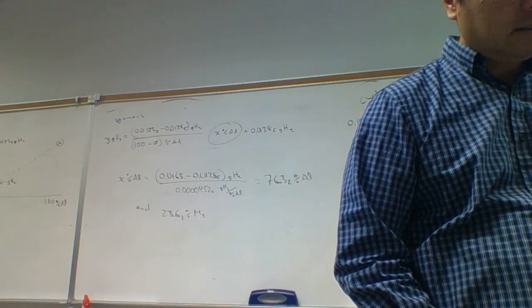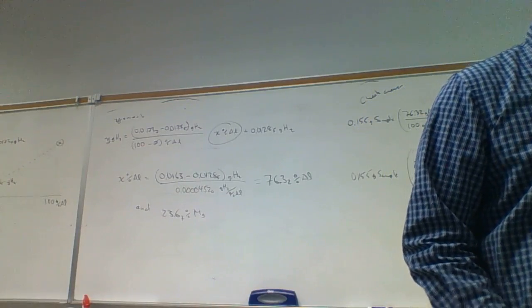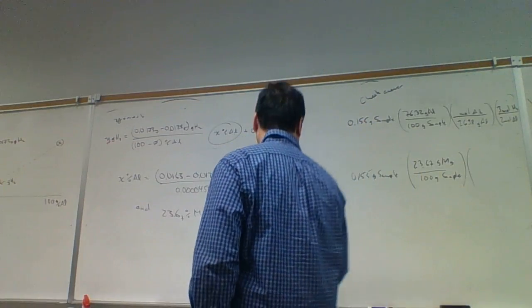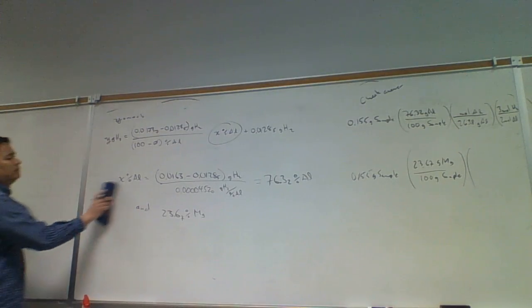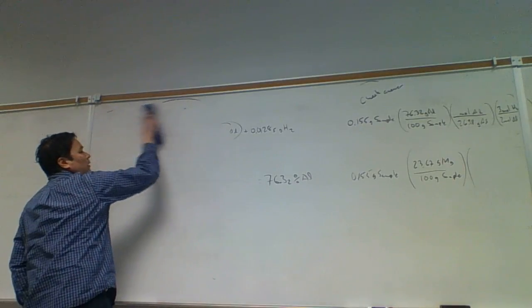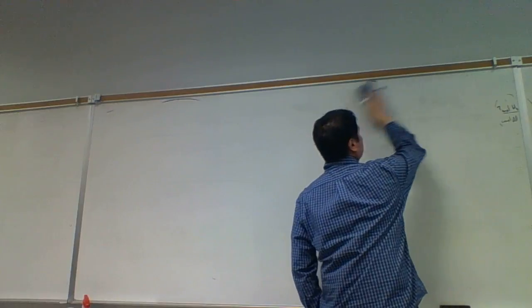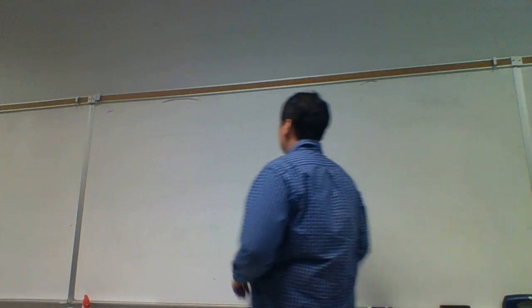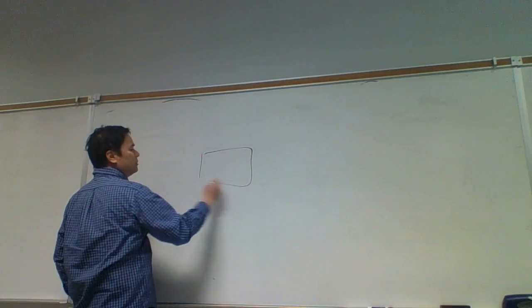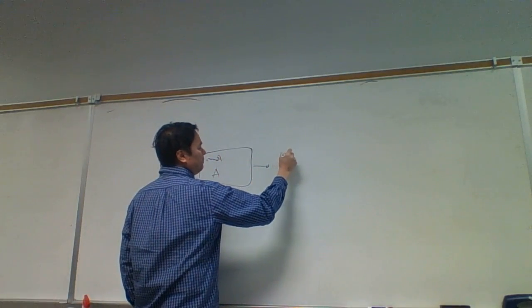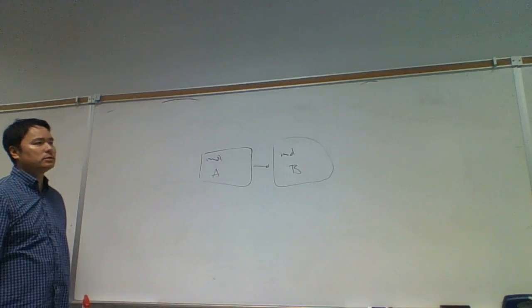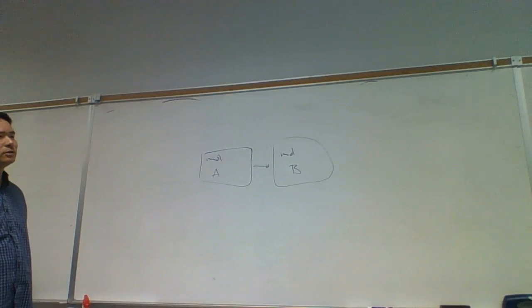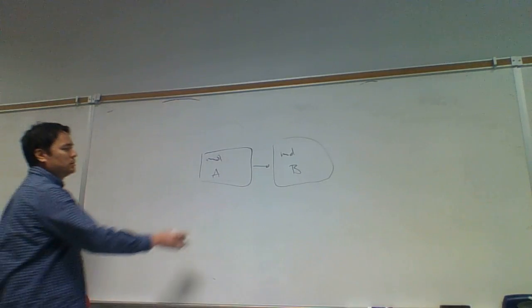We deal with mixtures and need to know the composition of the mixture to figure out the stoichiometry. At the heart of stoichiometry is the mole-to-mole conversion — moles of A to moles of B — so we need a balanced chemical equation. If we have grams of pure A, we can go to moles, do the mole-to-mole conversion, and go straight to grams of pure B.